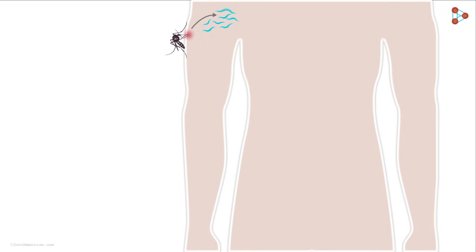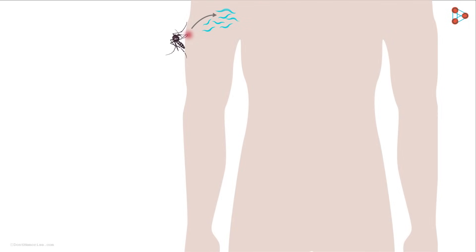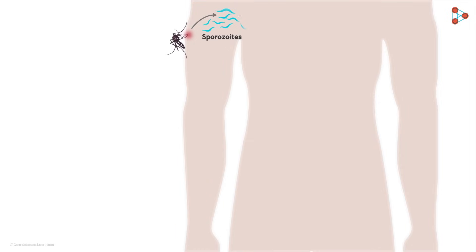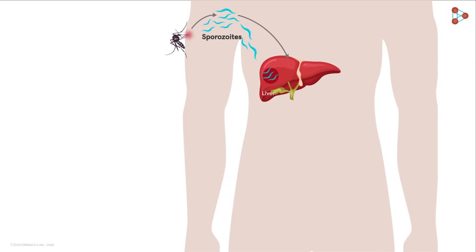The disease-causing Plasmodium gets transferred from mosquitoes to humans in the form of Sporozoites — a stage in the life cycle of Plasmodium at which they are capable of causing infection in the human body. Once they enter the bloodstream, they eventually reach their target: the liver. Here, they attack the liver cells and stay inside them for quite a long time, reproducing asexually to increase their numbers. After that, they release themselves back into the bloodstream by bursting out of the liver cells.